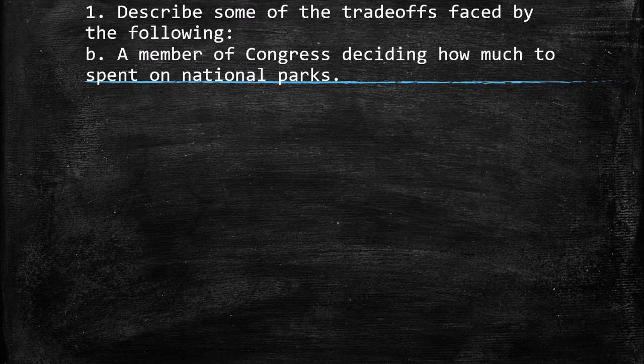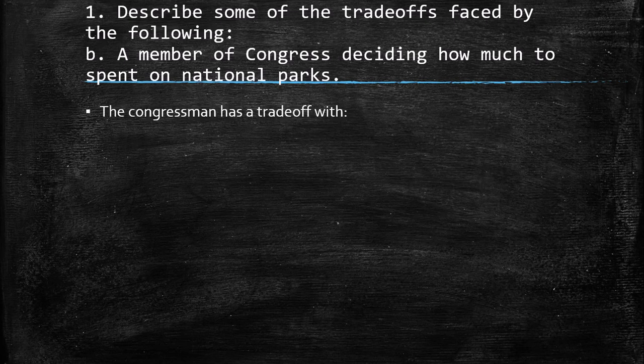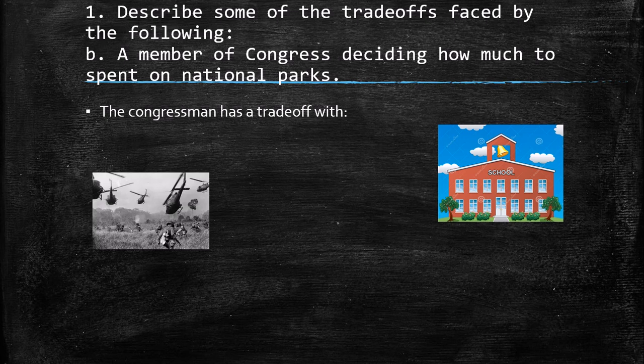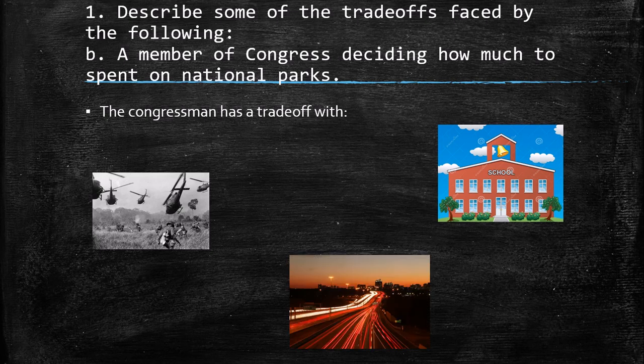The second case is a member of Congress deciding how much to spend on national parks — it is about public spending. The congressman has a trade-off with, for example, schools: maybe this quantity of money can be spent on education. Another trade-off is with war — maybe this money for national parks can be used for financing the war. And another trade-off is with highways: instead of spending on national parks, they can trade off with highways.